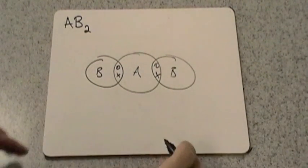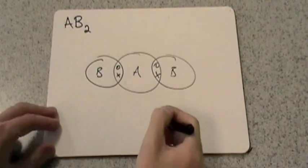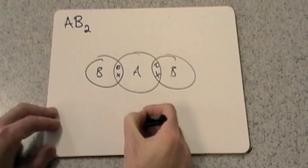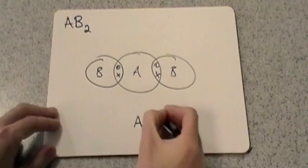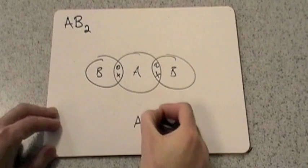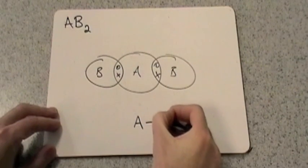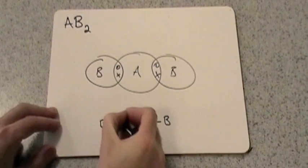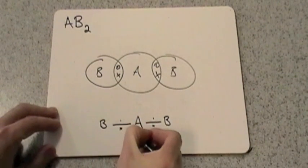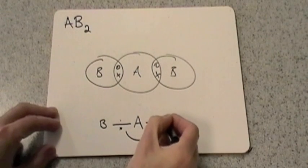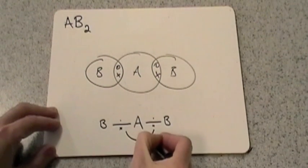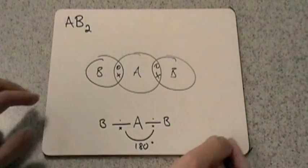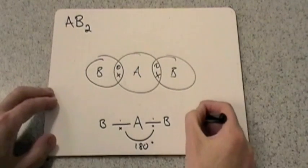The furthest apart they can get is obviously 180 degrees. So we are going to have the A atom in the center, and we're going to have as that pair of electrons we'll have a B there and a B there. So we've got this bond angle between the atoms of 180 degrees. This is the simplest shape and the name given to this shape is linear.